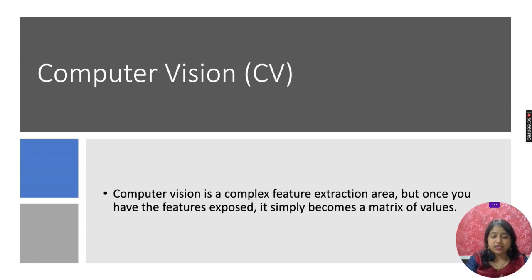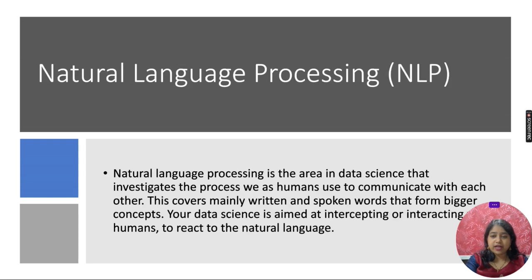Computer vision is a complex feature extraction area, but once the features are exposed, then it becomes simple matrix values.